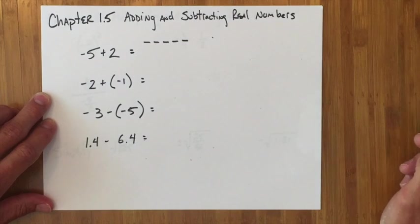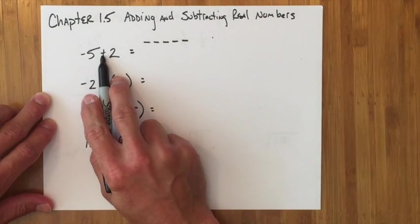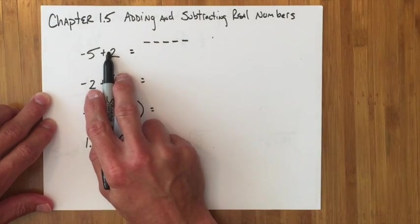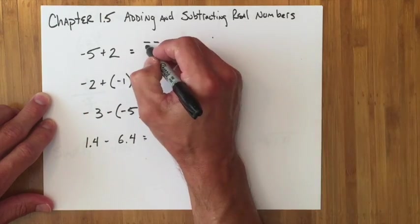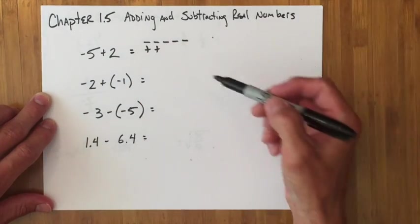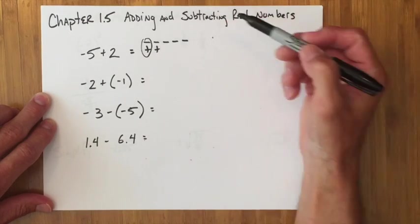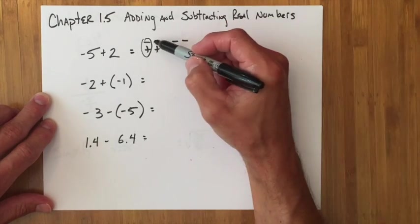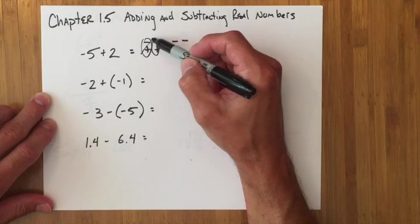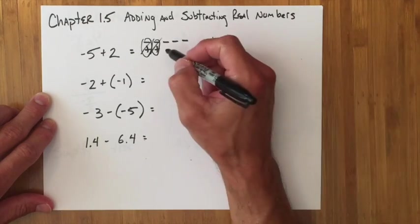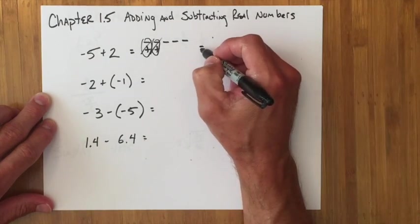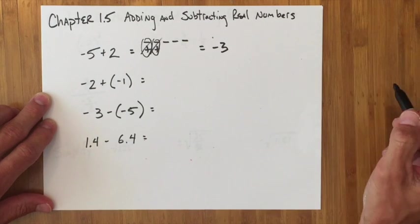You would have five negative signs, and you're going to add two, but you notice the two doesn't have a negative sign in front of it, so that means the two is positive. I'm going to add two positives. Well every positive and negative pair is sometimes referred to as a zero pair, and every zero pair essentially cancels itself out.